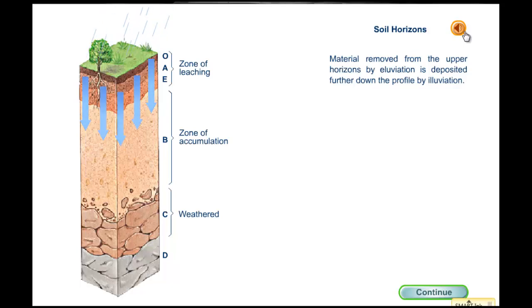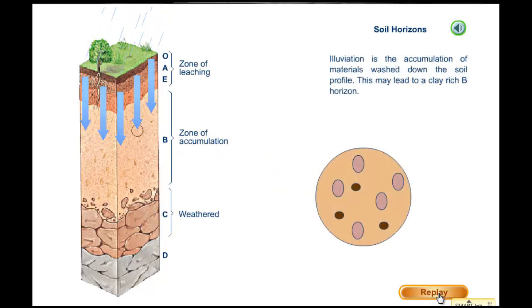Material removed from the upper horizons by eluviation is deposited further down the profile by illuviation. Illuviation is the accumulation of materials washed down the soil profile. This may lead to a clay-rich B horizon.